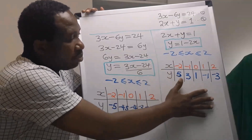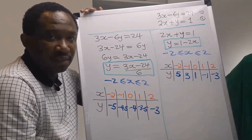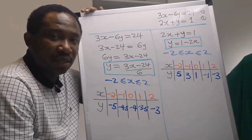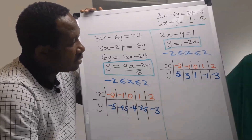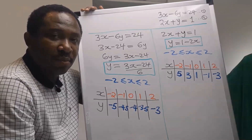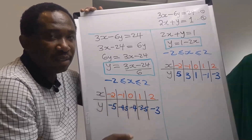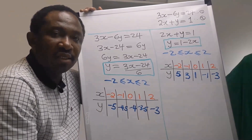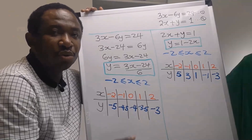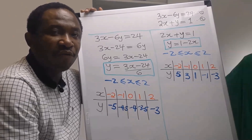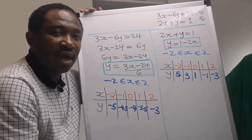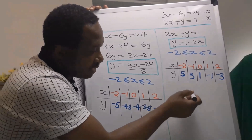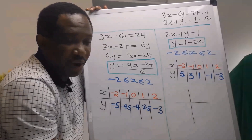Next we need a graph paper to complete this solution. We will plot our tables, and from the graph we are going to trace for the values of x and y.